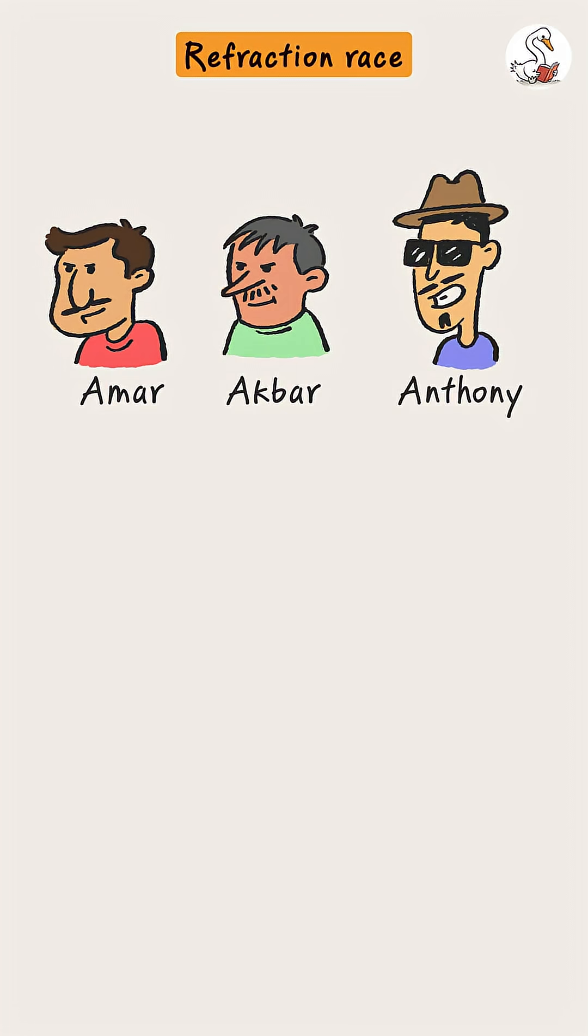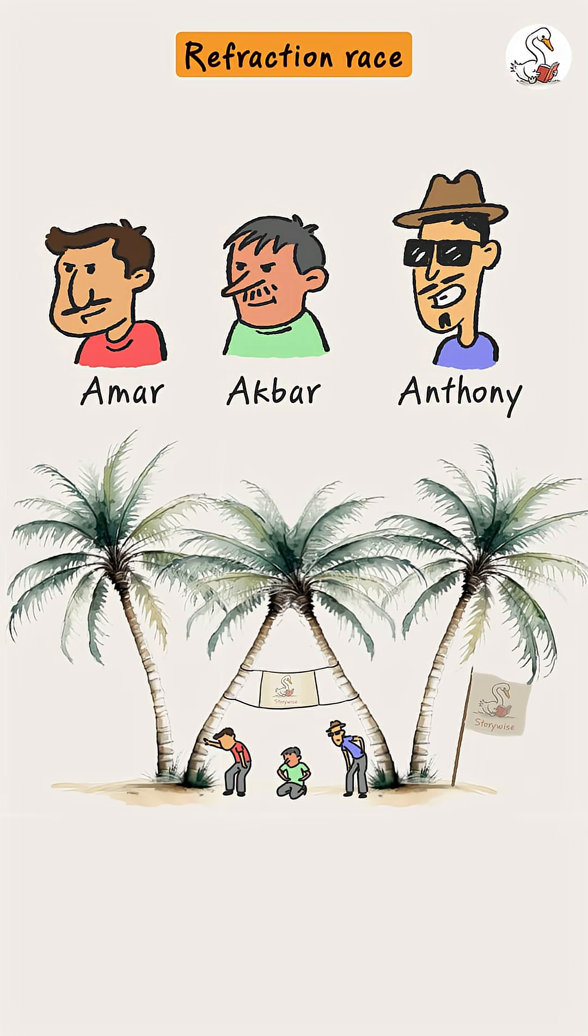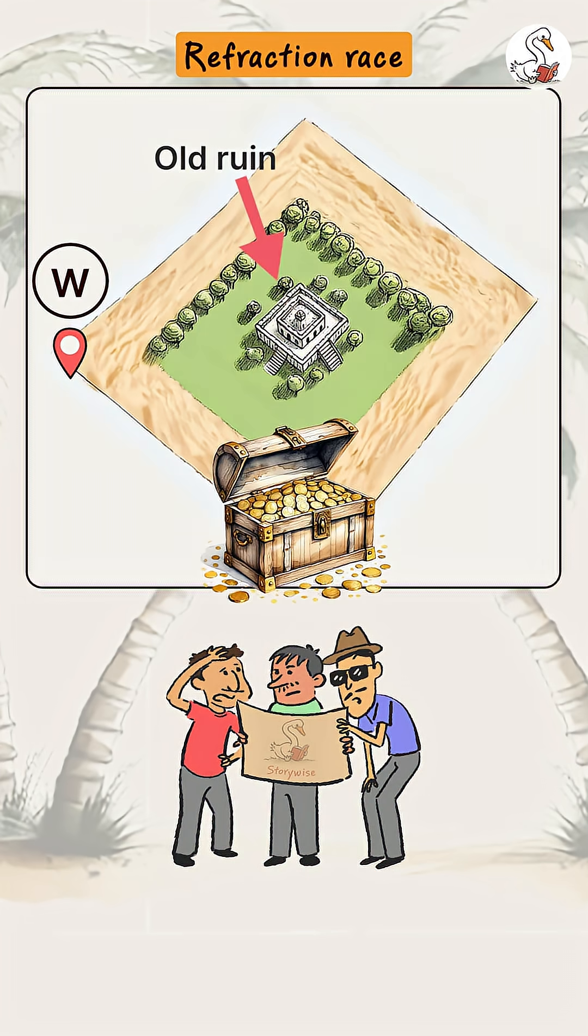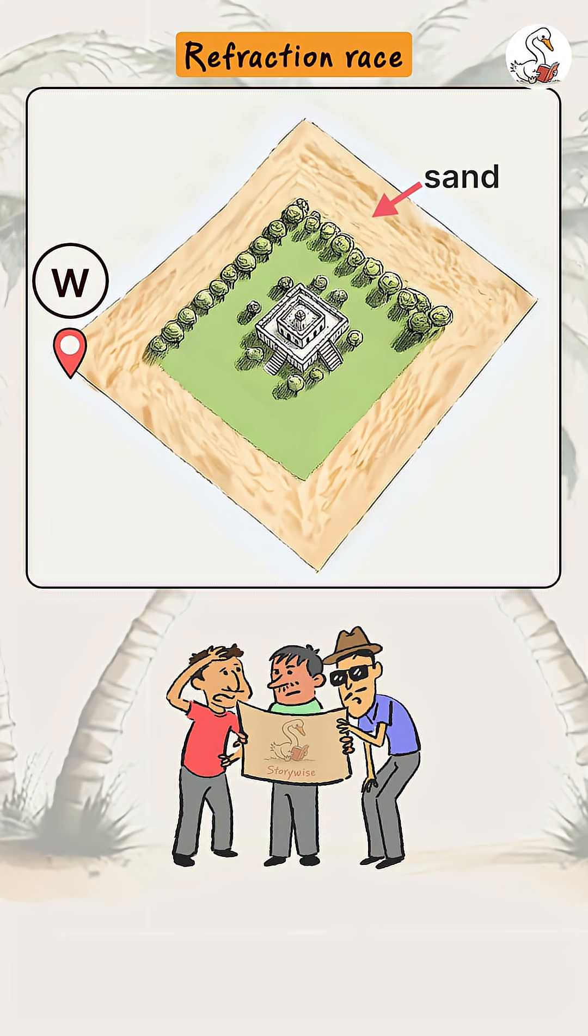Three competitors, Amar, Akbar and Anthony, reached beneath a large W in search of hidden treasure. But there, they found out the treasure was actually located in an old ruin, surrounded on all sides by sand.